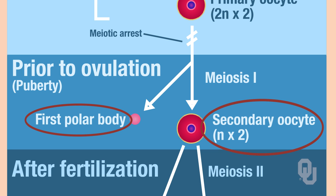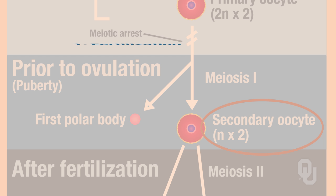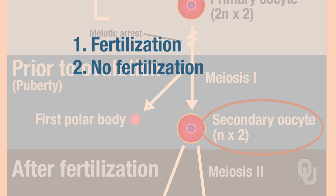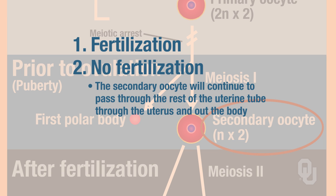Polar bodies disintegrate, so we won't worry about polar bodies. The secondary oocyte is what leaves the ovary and enters into the uterine tube. When the secondary oocyte gets into the uterine tube, one of two things can happen: fertilization could occur if there's sperm in the uterine tube, or fertilization might not happen. If no fertilization occurs, the secondary oocyte will continue through the rest of the uterine tube, through the uterus, and out the body.